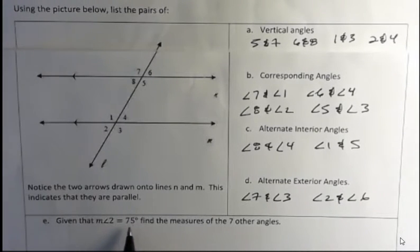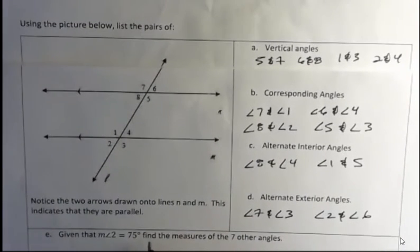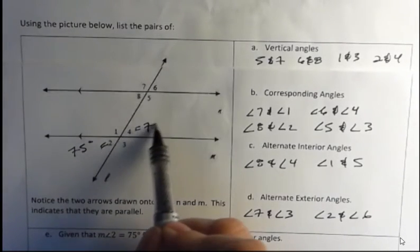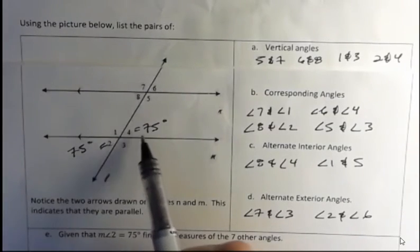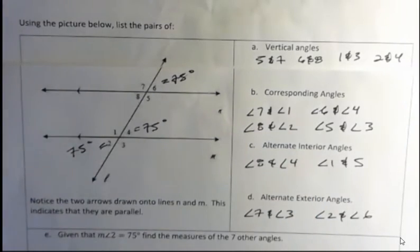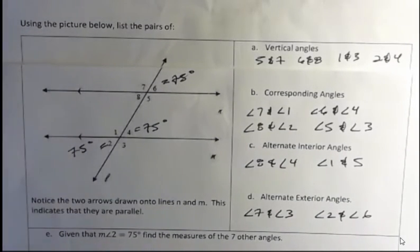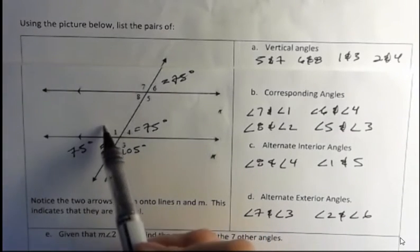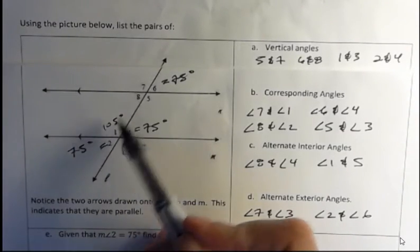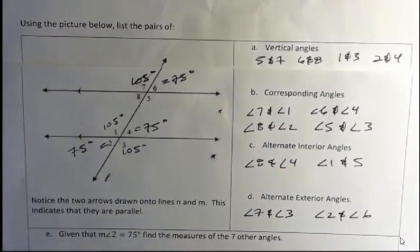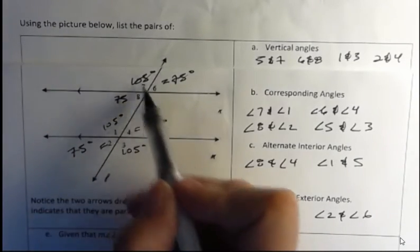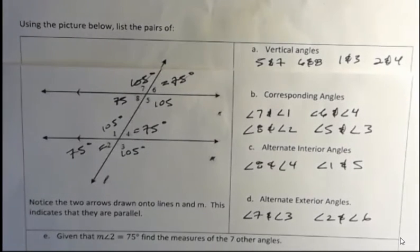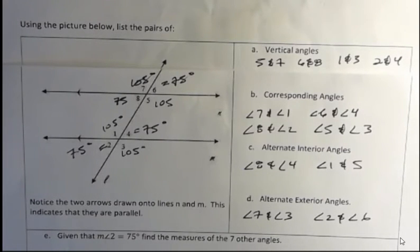Given that the measure of angle two is 75, find the measure of the other seven angles. If angle two is 75, its vertical angle is also 75. The corresponding angle four is also 75, and the corresponding angle six is also 75. Angles two and three are supplementary, so 180 minus 75 gives us 105 for angle three, and the vertical angle to that is also 105. The corresponding angle gives 105, and vertical to that is 75. You can use vertical, corresponding, alternate interior, and alternate exterior relationships to solve for all angles.